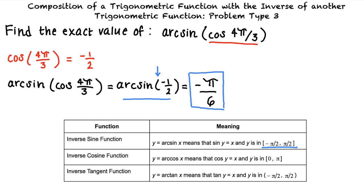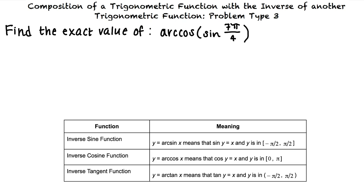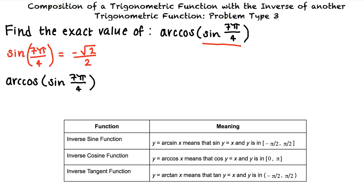I think that makes sense, but can I try another example to see if I understand? Let's say we are asked to find the exact value of the inverse cosine of the sine of 7π/4, and to write our answer in radians in terms of pi. First, we need to determine what the sine of 7π/4 is. The sine of 7π/4 equals negative √2/2. Therefore, the inverse cosine of the sine of 7π/4 is equivalent to the inverse cosine of negative √2/2.